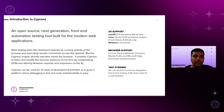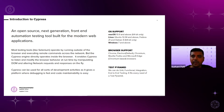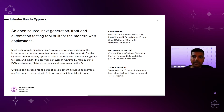Cypress can be used for all sorts of development activities happening in parallel to testing activities, as it gives a platform where debugging is fast and code mentality is easy. The operating systems that Cypress supports are Mac OS 10.9 and above (64-bit only), Linux, and Windows 7 and above.